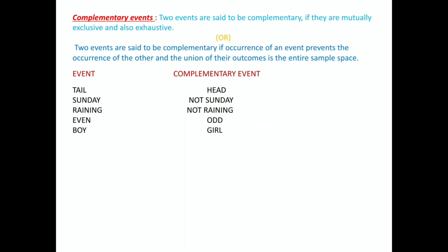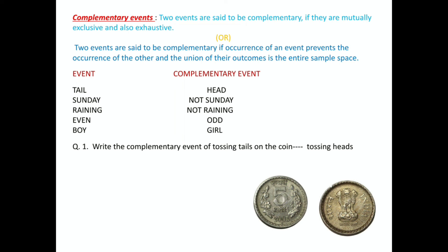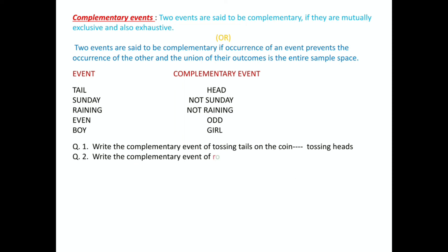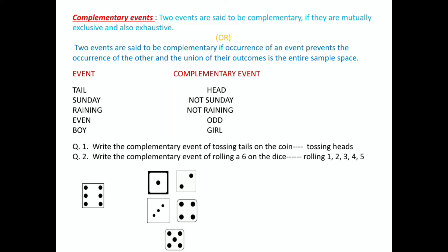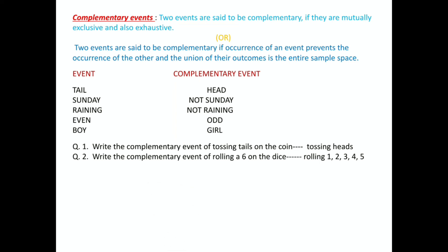Practice questions: What is the complementary event of tossing tails on a coin? The answer is heads. What is the complementary event of rolling a 6 on a dice? The answer is getting 1, 2, 3, 4, or 5. The probability of getting a tail is 1 by 2, and its complementary — heads — is also 1 by 2. So the sum of these probabilities equals 1.